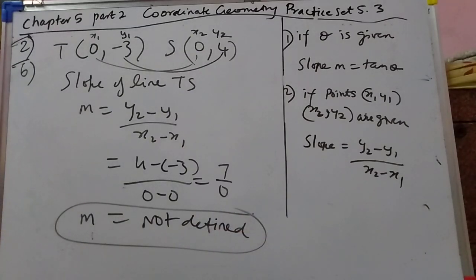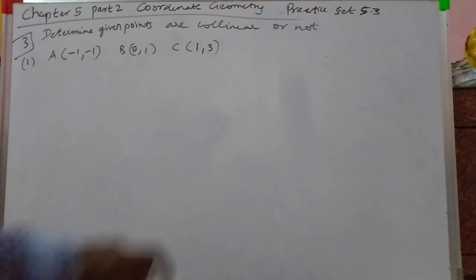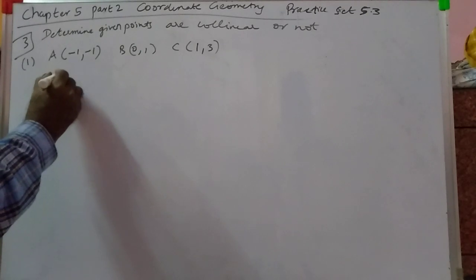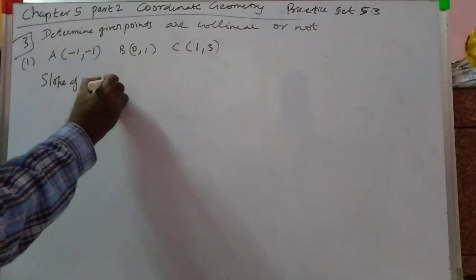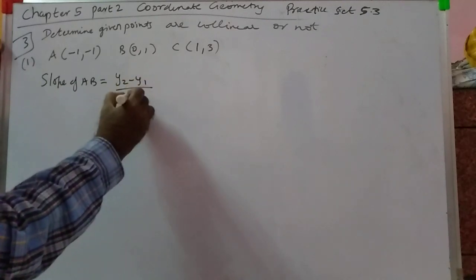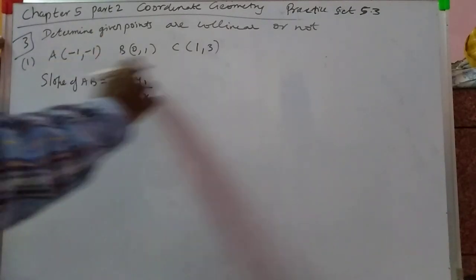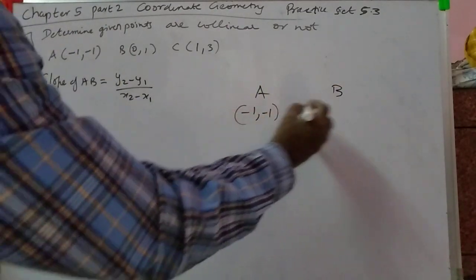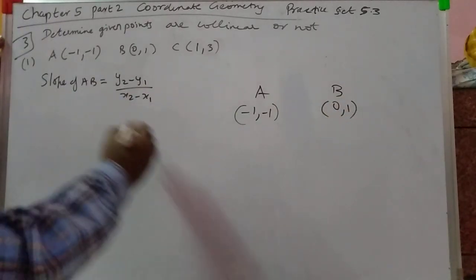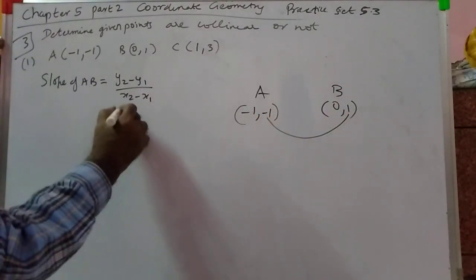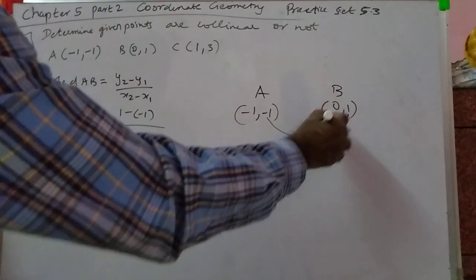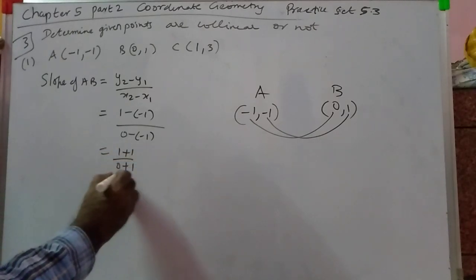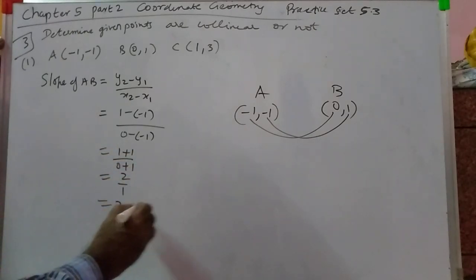Next we will do the third problem. First problem: let us calculate the slope of AB. Formula: y2 minus y1 over x2 minus x1. Let A be (minus 1, minus 1) and B be (0, 1). So: 1 minus of minus 1, over 0 minus of minus 1 — that is 1 plus 1 over 0 plus 1, which is 2 upon 1, that is 2.